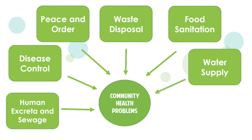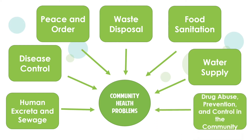Sixth is water supply. When waters run dry, people can't get enough to drink, wash, or feed crops, and economic decline may occur. Seventh, drug abuse prevention and control in the community. Those who abuse drugs are more likely to engage in risk-taking behaviors at home and even in the community. They have a higher co-occurrence of mental disorders and are more likely to be jailed for crimes committed.